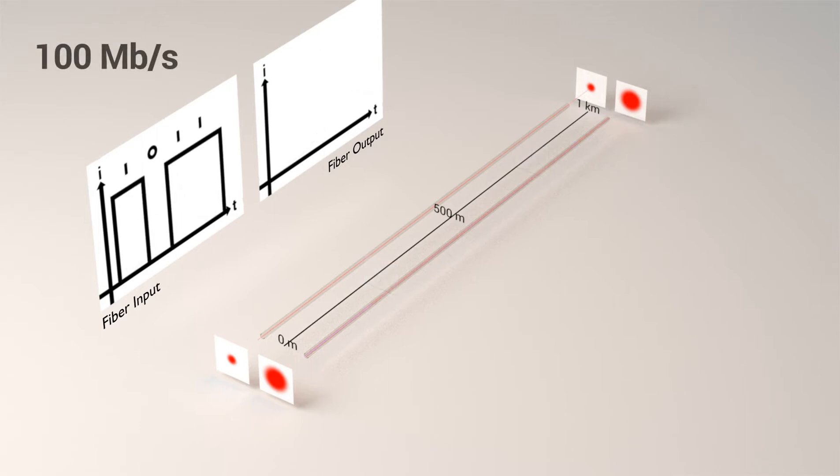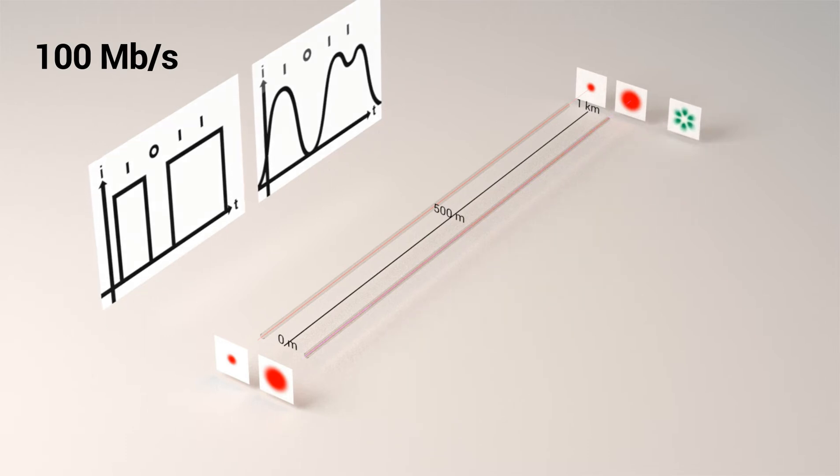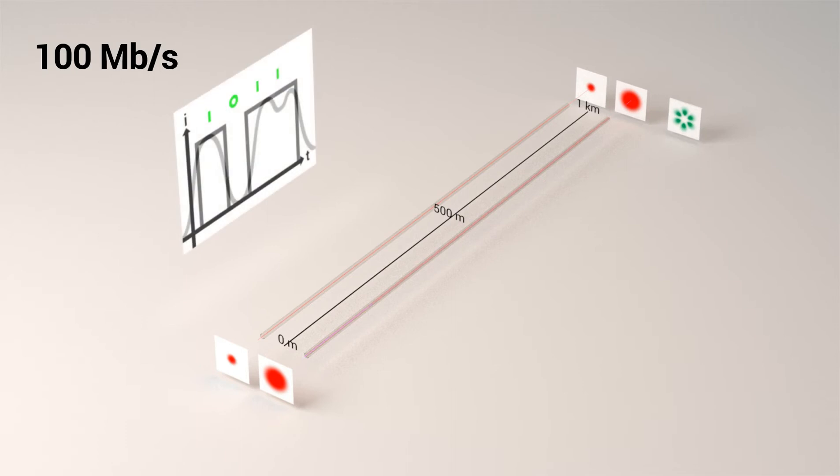Distortion increases with shorter pulses and longer propagation distance. Therefore, for 1 km link and data transmission at 100 Mb/s, the impact of modal dispersion is weak. The output signal is still recognizable.